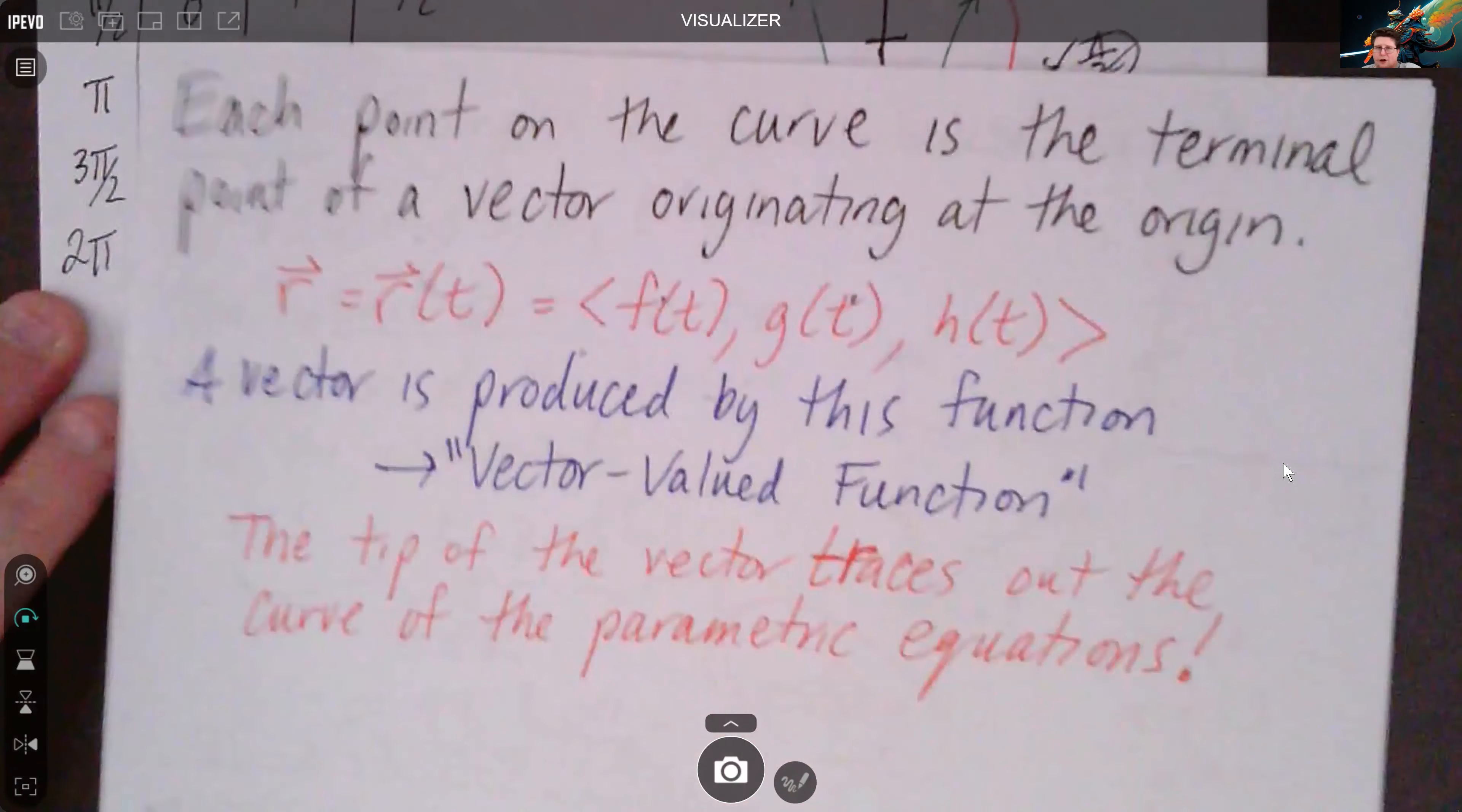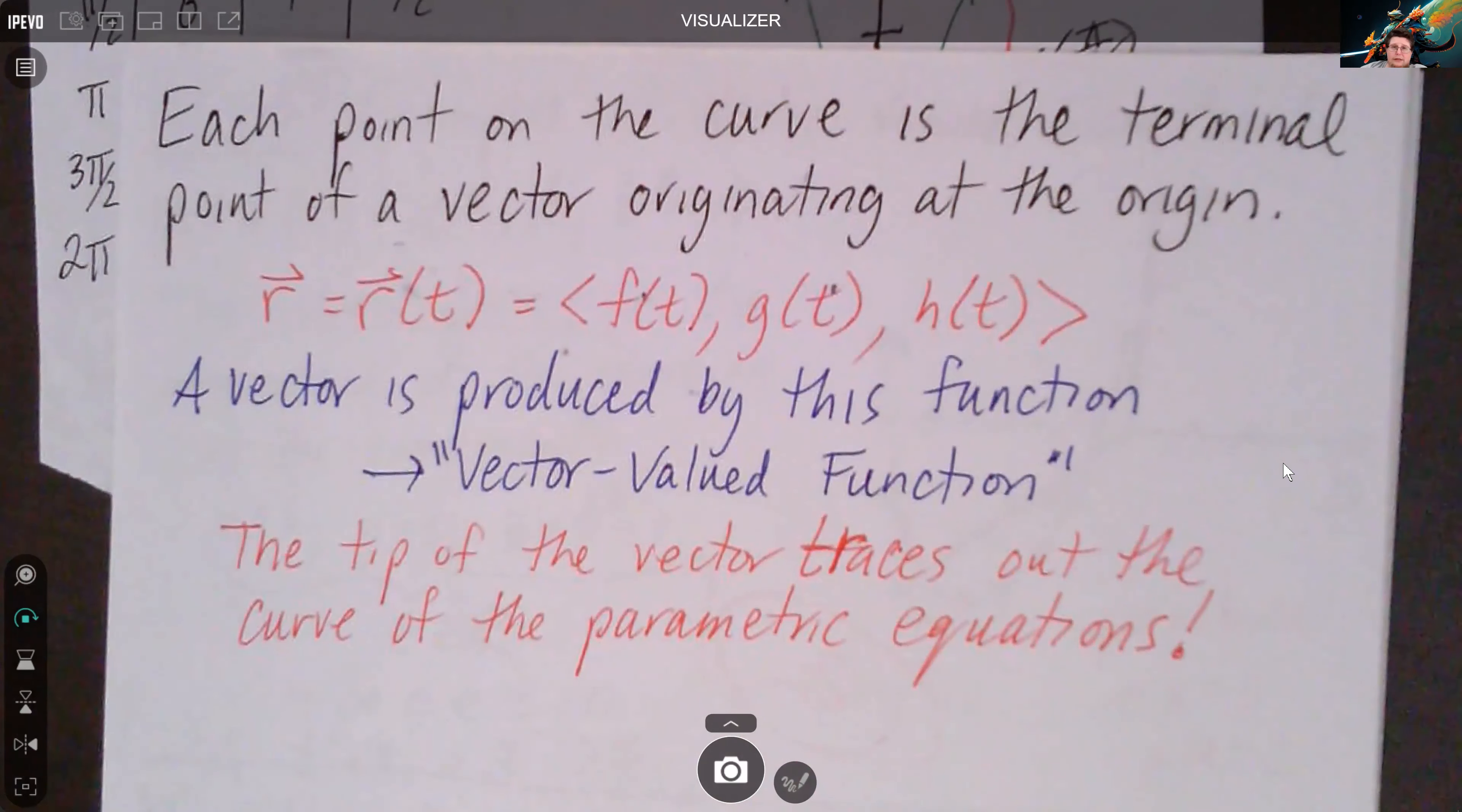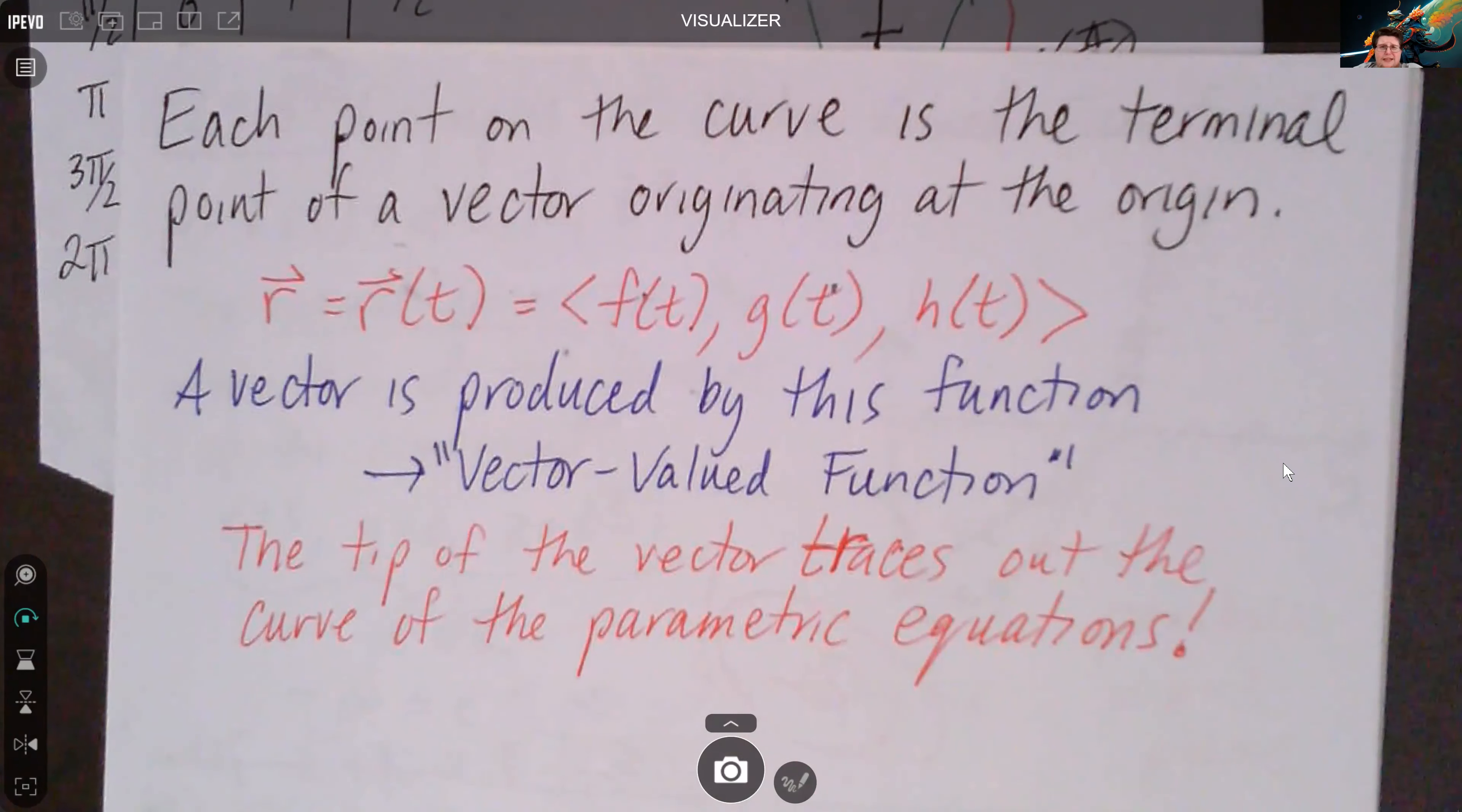So we have our function r is a function of time: f of t, g of t, and h of t for the x, y, and z components. Since this function produces a vector, it is called a vector-valued function.